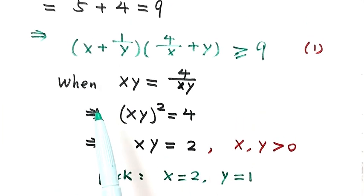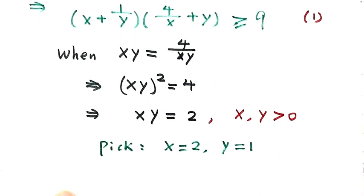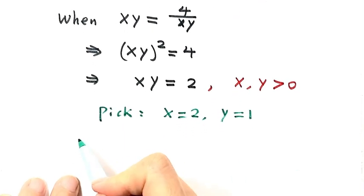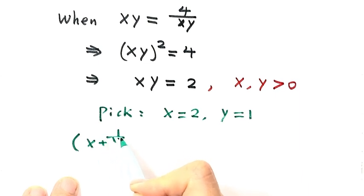So now let's plug into this expression. So let's see. So then here, x plus 1 over y times 4 over x plus y.